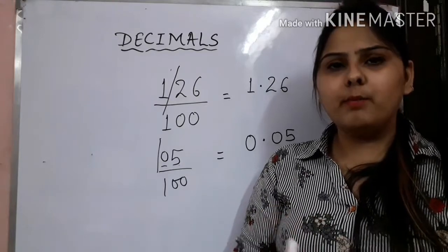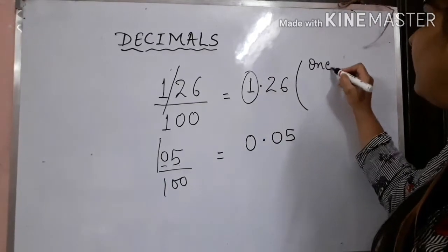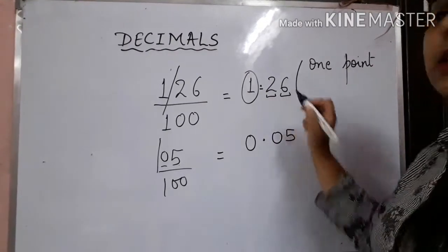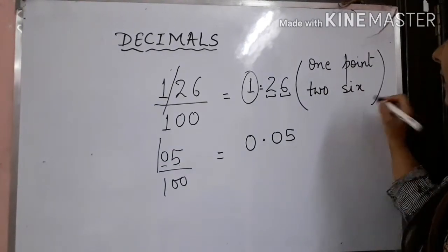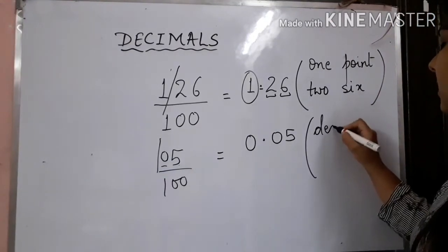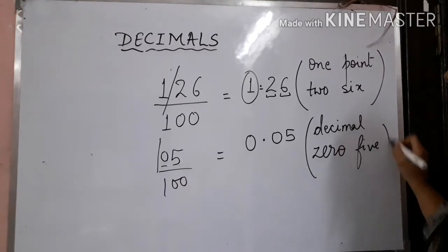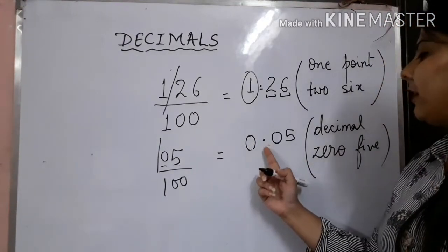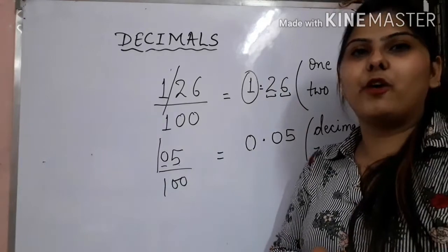In order to write a number name for a given decimal, always remember this is written as 1, then referred to as point, and always separate the digits after the decimal, which would be 2, 6. For 0.05, the number name would be decimal 0, 5. Since there is no digit before the 5, I can write decimal 0, 5. I hope now you know how to write a number name for a given decimal.